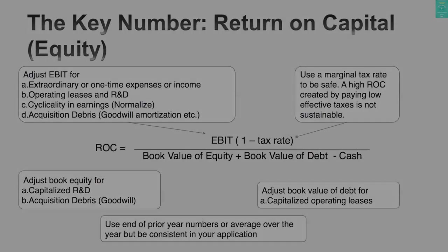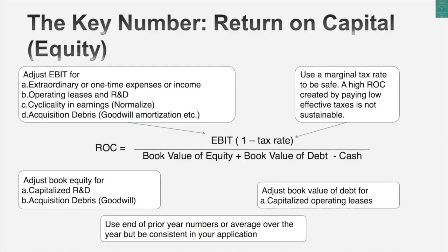How much you're earning on your invested capital — so let's say you make 30%, you're a great company. 70% times 30% gives me a sustainable growth rate of 21% in operating income. Notice the key number in both these computations.